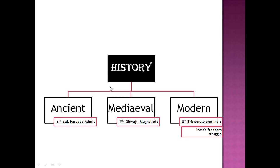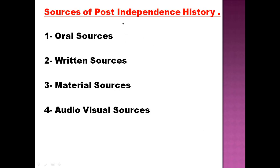History is mostly divided into Ancient, Medieval, and Modern periods. You studied Ancient history in 6th standard, Medieval in 7th, and Modern history in 8th standard. This year in 9th standard, you are going to learn post-independence history. The sources of post-independence history are: oral sources, written sources, material sources, and audio-visual sources.